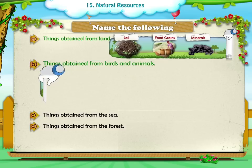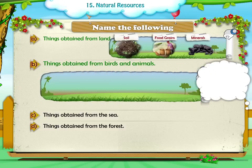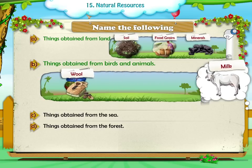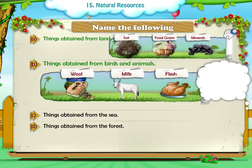B. Things obtained from birds and animals: Wool, Milk, Flesh.